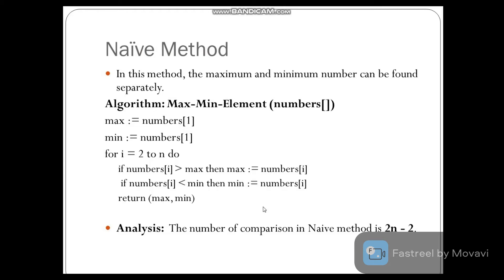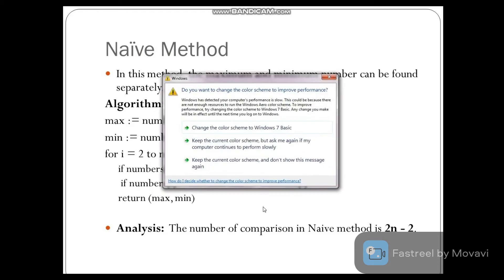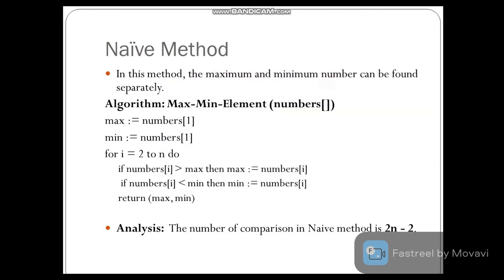In that case, the total number of comparisons in the naïve method is 2n−2. So we can say that the time complexity of the Max-Min problem using the naïve method is O(2n).